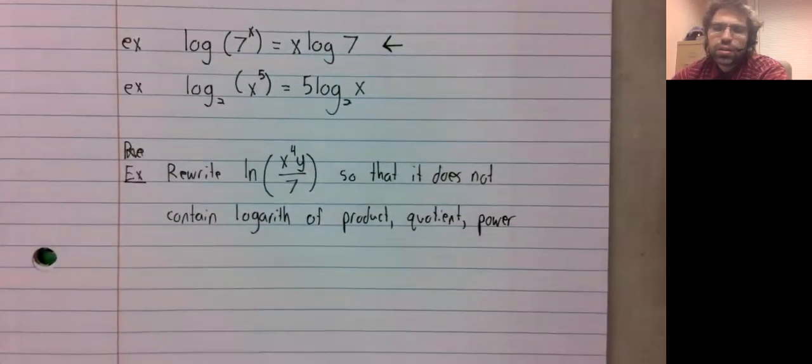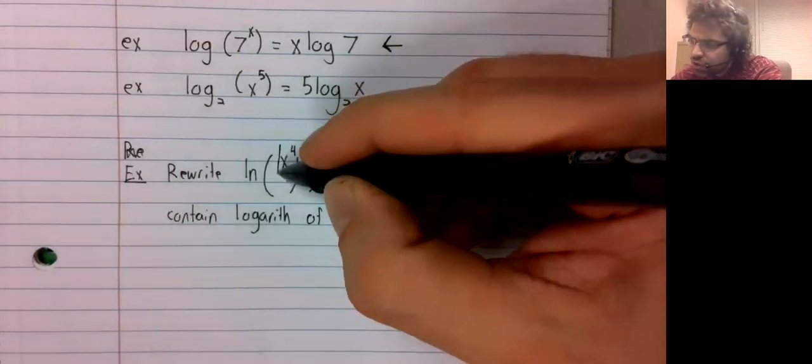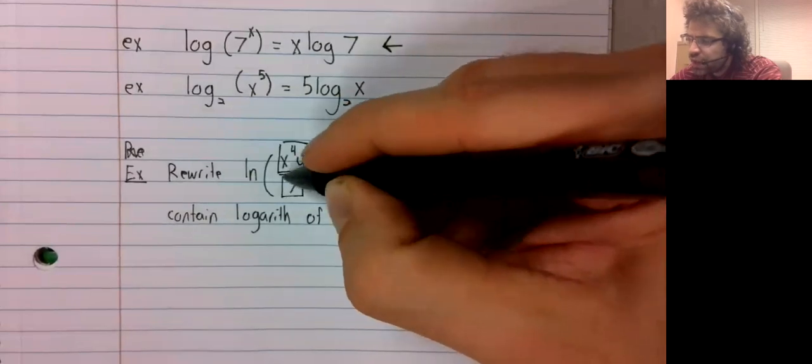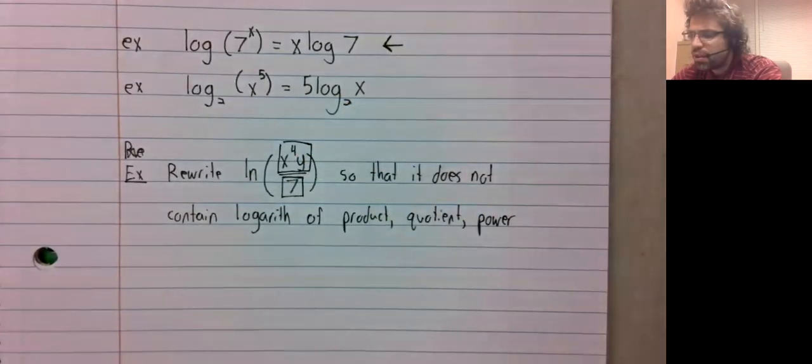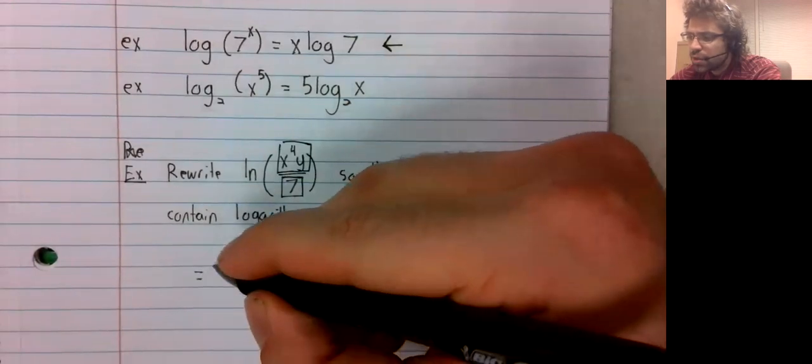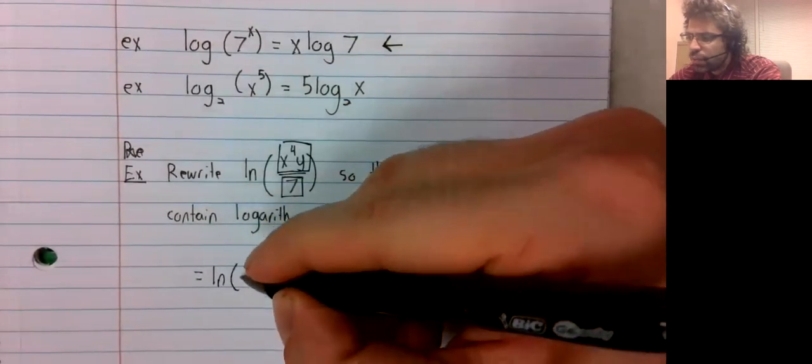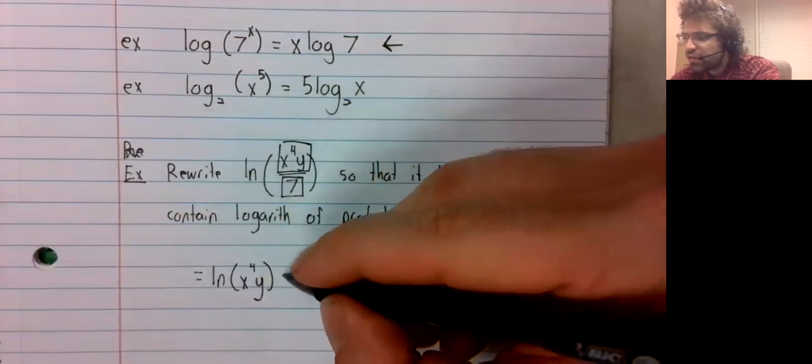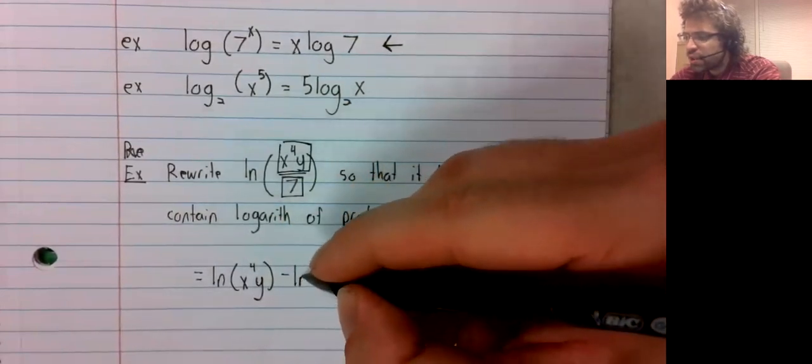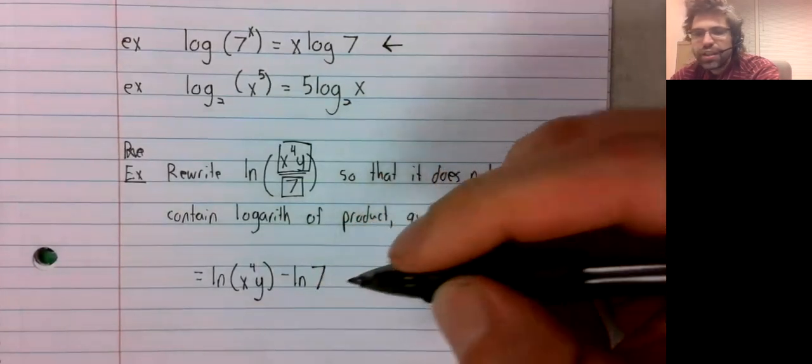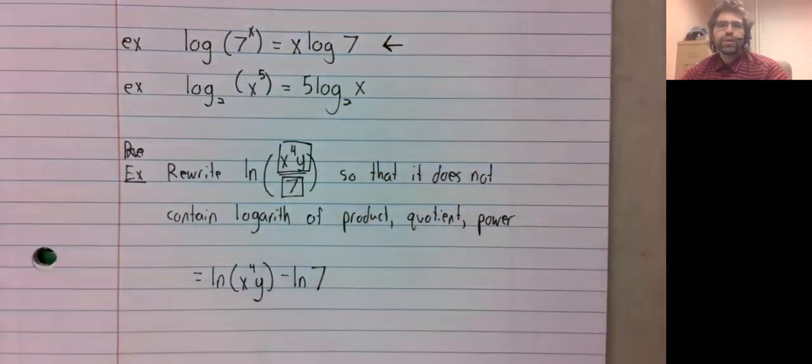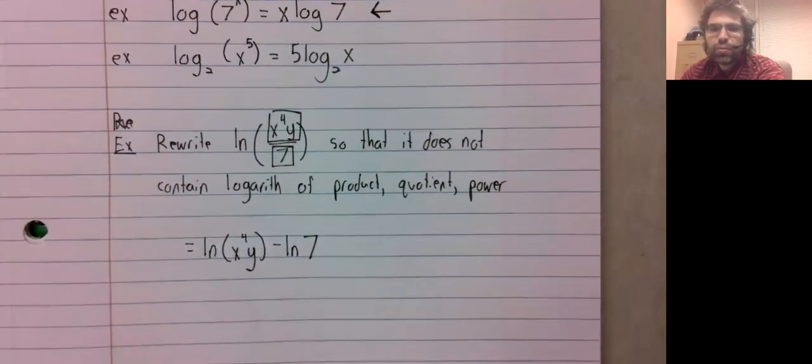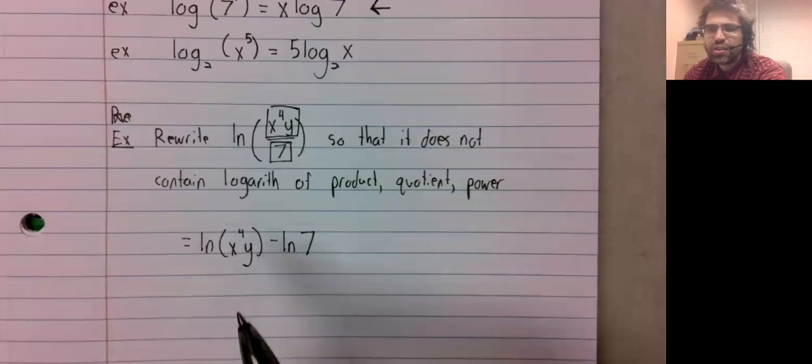So what we have here is a quotient, something divided by something else. So the quotient rule, which I haven't stated in this video but which we have seen before, says that we can rewrite a logarithm of a quotient as a difference.